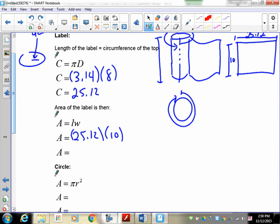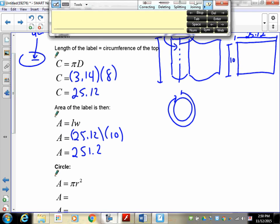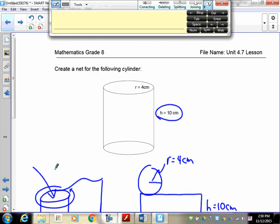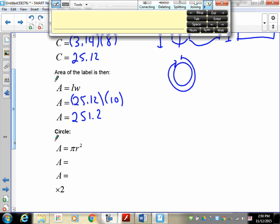So, my area of the label is 251.2. And, of course, we're working in, I think it's centimeters, isn't it? Yeah, we're in centimeters. So, this is going to be centimeter squares. Okay, so now we have the label. What's left to do now is the bottom and the top. Now, the bottom and the top are circles.